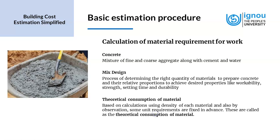We have a concept called theoretical consumption of material, based on calculations using density, weight and volume of each material, and also by observation — some unit requirements are fixed in advance. When hand mixing is done on a construction site, certain ratios are already prescribed which can be followed for the work assigned on site. The grade of concrete is an important factor to find out the quantity of cement. The grade of concrete depends upon the water-cement ratio, and the quantity of cement used is dependent on the water-cement ratio. The quantity of cement also determines the other components like sand, aggregate, coarse aggregate and gravel to be used in the mix.